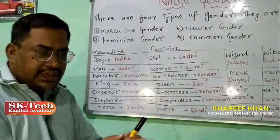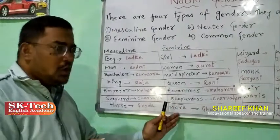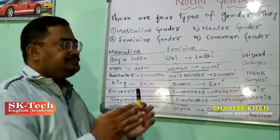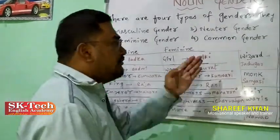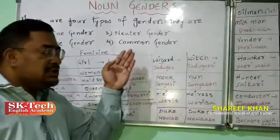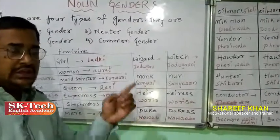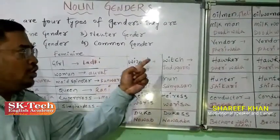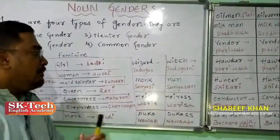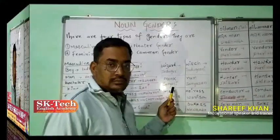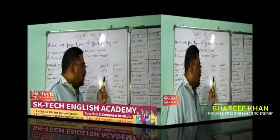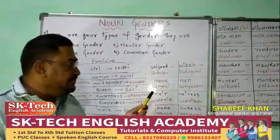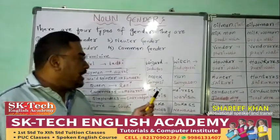Horse — male horse. Next example: Wizard — masculine form. Witch — feminine form of wizard. Monk — masculine form. Nun — sanyasan, the feminine form of monk (sanyasi).